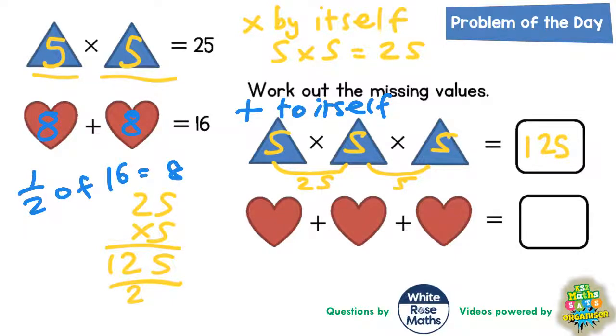So if those hearts are worth 8, then these three hearts are also worth 8. So we've now got 8 plus 8 plus 8. So that's 3 lots of 8. 3 lots of 8 is 24. So the answer to the second sum must be 24.